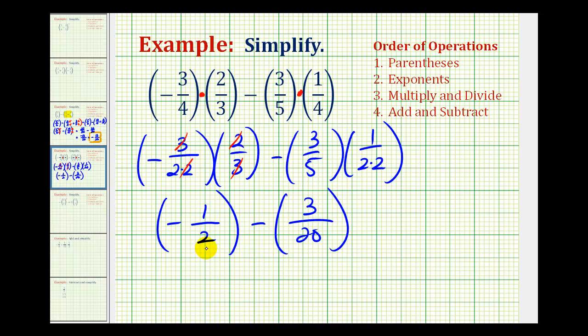And now in order to subtract these fractions we have to obtain a common denominator. So if we have a denominator of two and twenty we want the smallest number that is divisible by both twenty and two or the least common multiple of two and twenty. So twenty will be our least common denominator. And we can rewrite this fraction with a denominator of twenty if we multiply both the denominator and the numerator by ten.